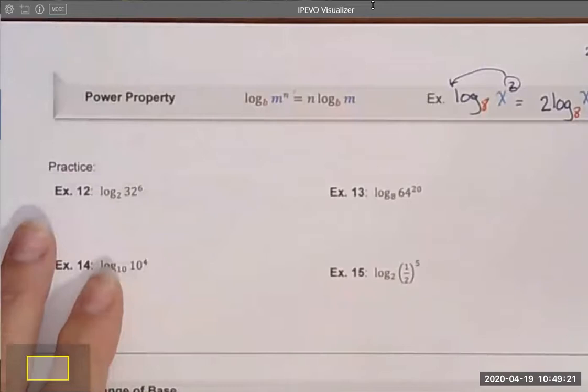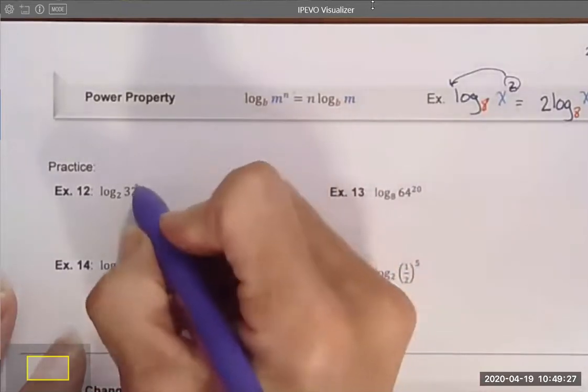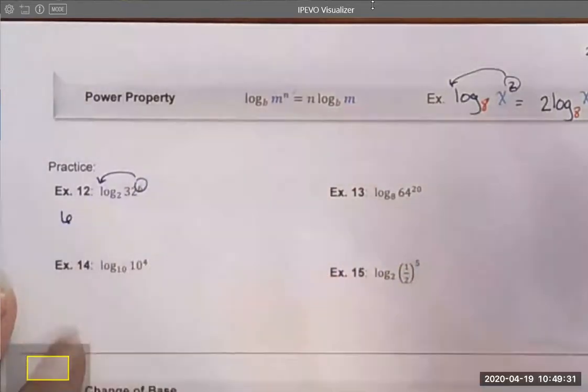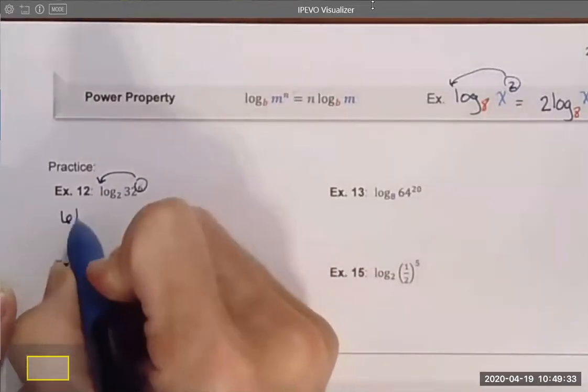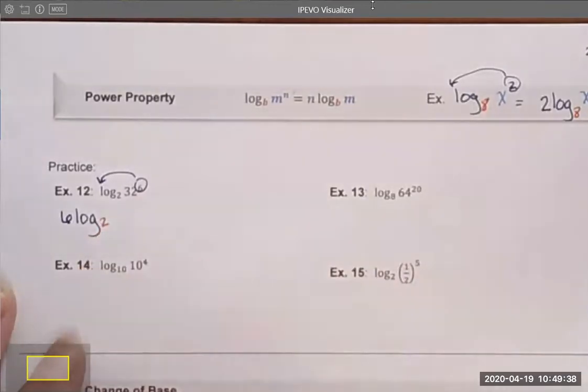Let's look at an example. Let's try example 12. If I rewrite this, first thing I'm going to do is I'm going to pop my exponent to the front of my expression and then I'm going to keep everything else exactly the same. So it becomes 6 log base 2 of 36.